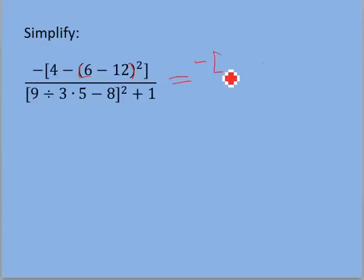So, we're going to have negative bracket 4, all of this is going to stay the same, minus, and then 6 minus 12 gives us a negative 6 squared. Close the brackets.